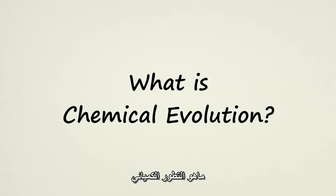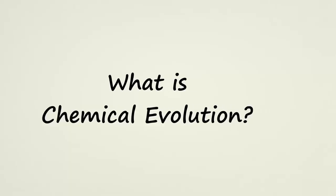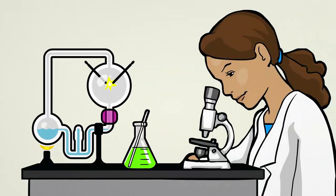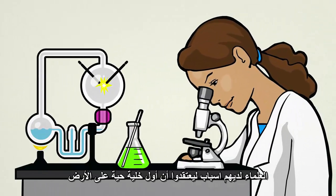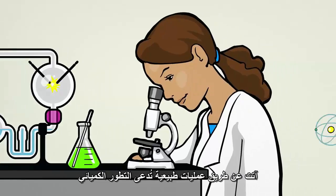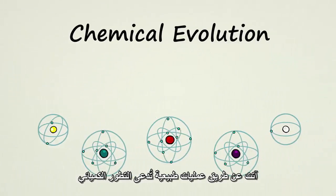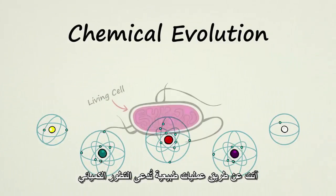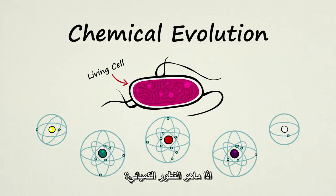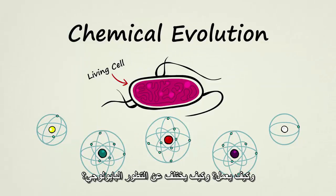What is chemical evolution? Scientists have reason to think that the first living cells on Earth came about through a natural process called chemical evolution. What is chemical evolution? How does it work? And how is it different from biological evolution?